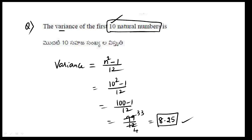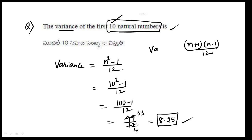So, variance of consecutive numbers comes to this. Direct formula: n² - 1 by 12, which can also be written as (n+1)(n-1) divided by 12. Variance always comes to this; if not variance, standard deviation also comes to this.